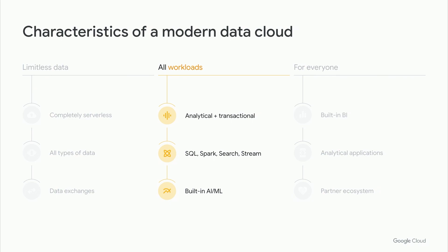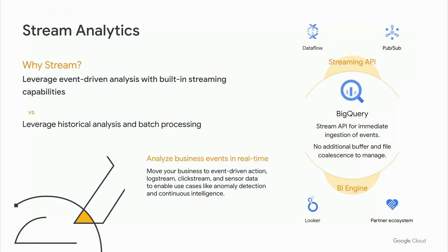Let's now look at the workloads organizations want to enable and unify. Our goal is to focus on simplification. Historically, most data warehouses have supported batch processing. However, in today's competitive environment, speed is a differentiator. With BigQuery's streaming API and additional services like PubSub, Dataflow, and Looker, organizations are able to get an end-to-end real-time system with real-time ingestion and analysis that unlocks new use cases like anomaly detection, recommendation engines, and overall continuous intelligence.